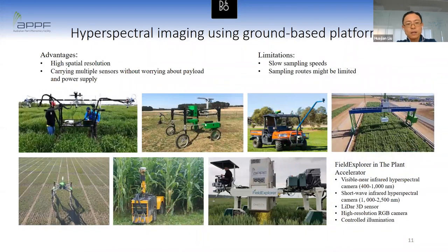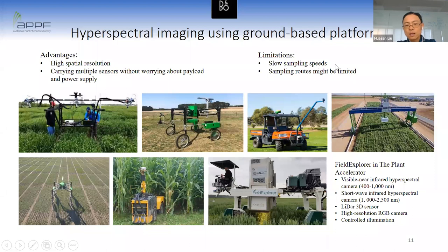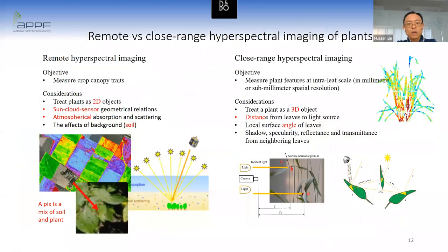The ground-based platform has the advantage of collecting data with very high spatial resolution and can carry multiple sensors without worrying about payload and power supply. However, this type of platform usually has low sampling speed and the sampling routes are limited by field patterns. Remote sensing and close-range hyperspectral imaging are quite different — the goal of remote sensing is to measure canopy-level features, while the objective of close-range sensing is to measure plant features at the inter-leaf scale.